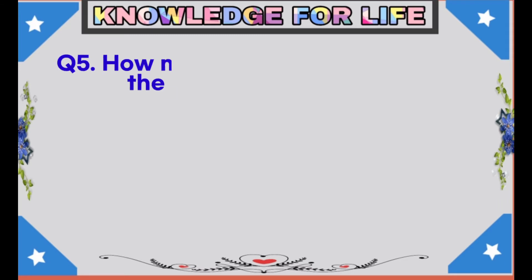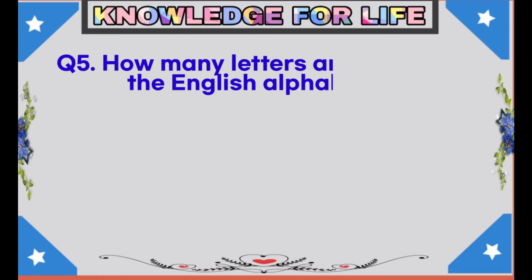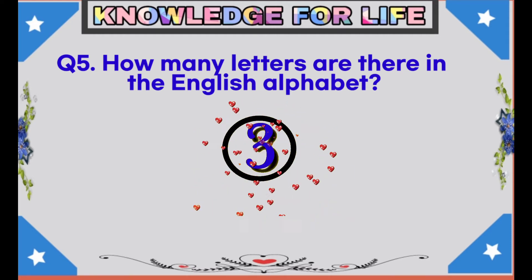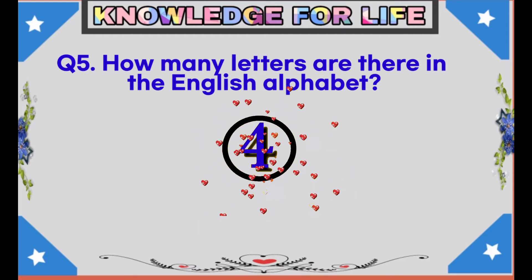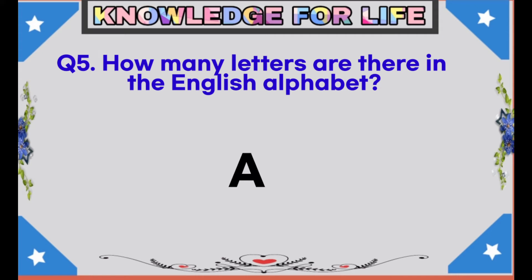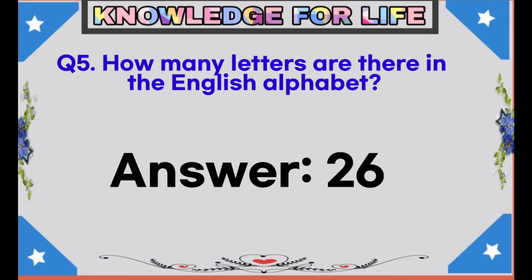Question number 5: How many letters are there in the English alphabet? Answer: 26 letters.